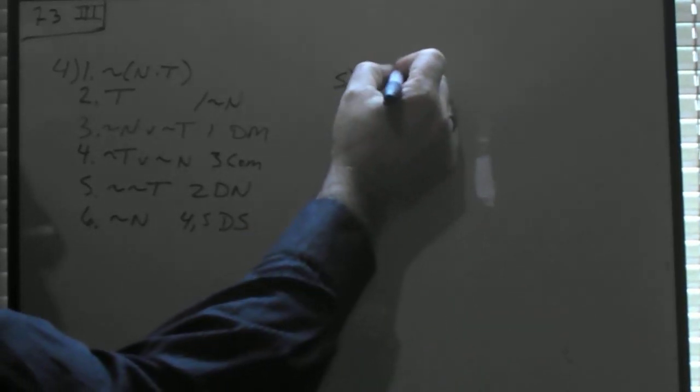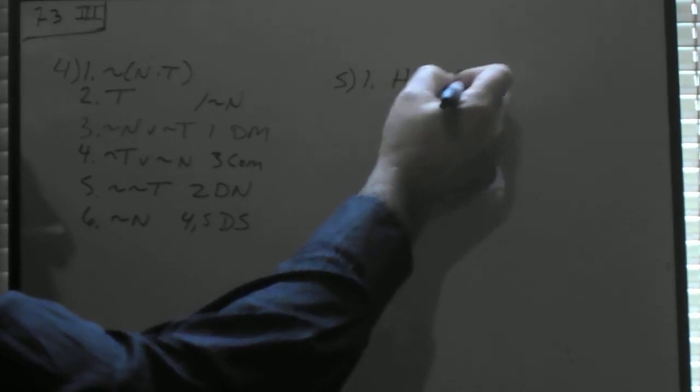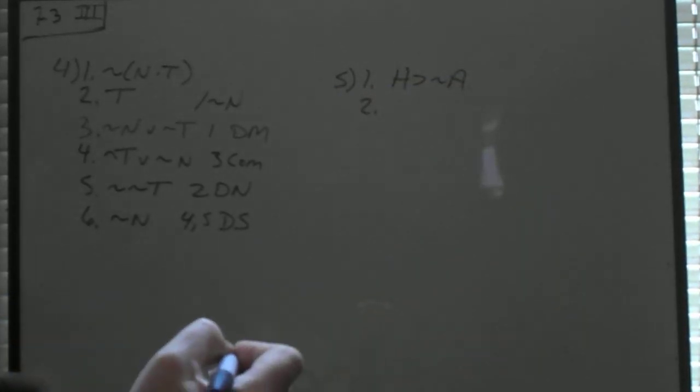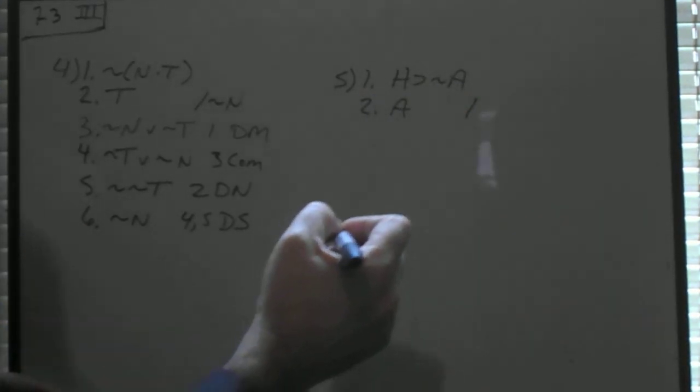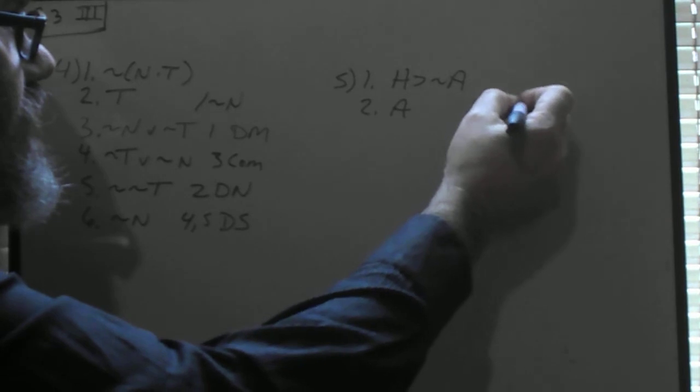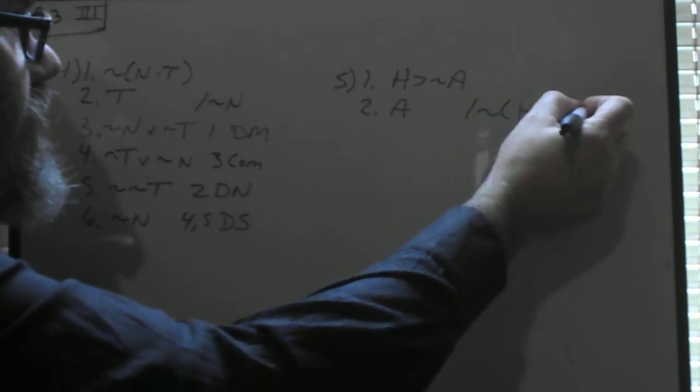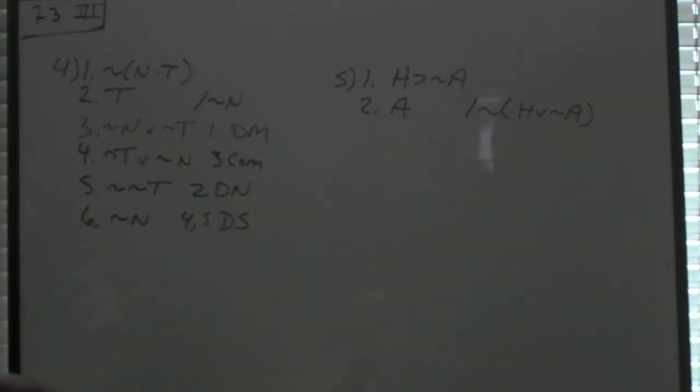And finally, number 5, we have H then not A, A, therefore not H or not A. Okay.